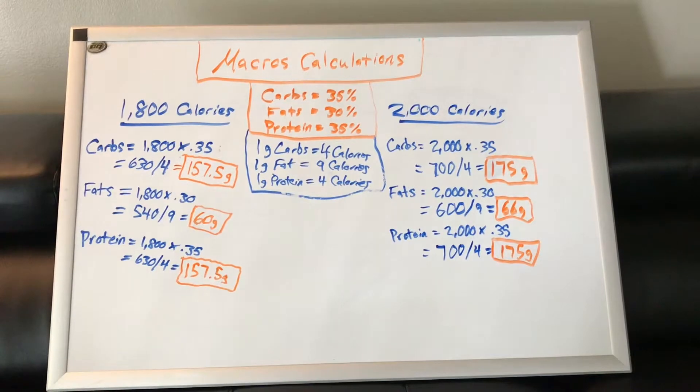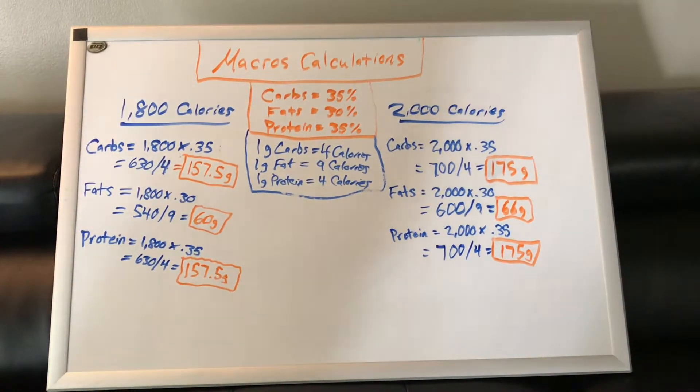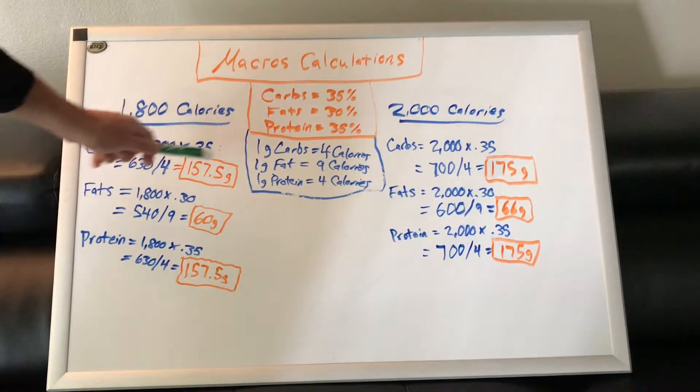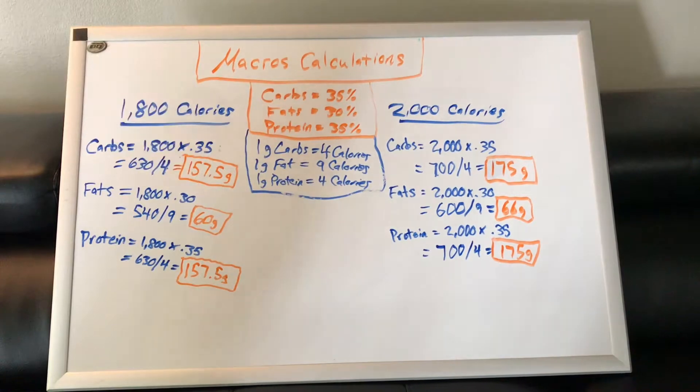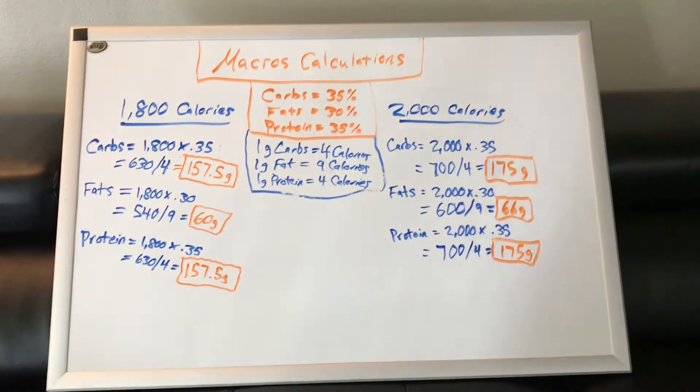You could really just round that up to 160 grams per day. Now the fats down here, since we're on 1,800 calories, we're going to multiply that by 0.30, which is 30% of our daily intake. That's going to give us 540 calories. Since 1 gram of fat equals 9 calories, we're going to divide 540 by 9. It's going to give us 60 grams of fat for the day.